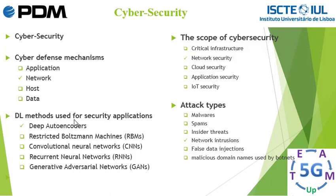Deep learning methods used for cybersecurity applications include: deep autoencoder, restricted Boltzmann machines (RBM), convolutional neural networks (CNN), recurrent neural networks (RNN), and generative adversarial networks (GAN). The restricted Boltzmann machine is the building block of deep belief networks, and both RBMs and deep belief networks can be categorized as a subset of deep autoencoders.